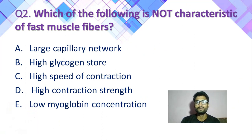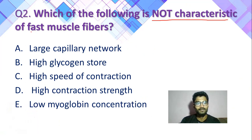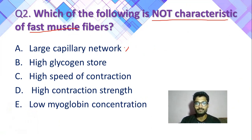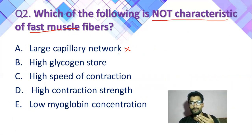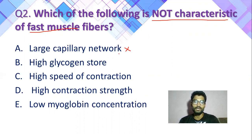Large capillary network is not a characteristic of fast twitch muscle fiber. Large capillary network की जरूरत slow twitch muscle fiber को पड़ेगी, क्योंकि blood की supply होगी। Blood के through oxygen particular area में पहुंचेगा जहाँ oxygen की जरूरत है।